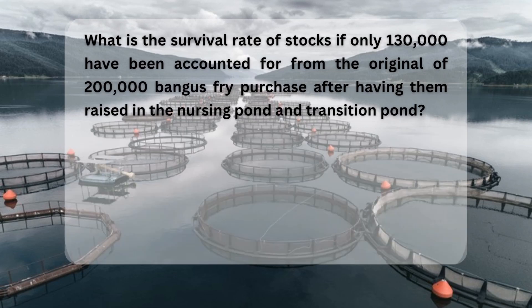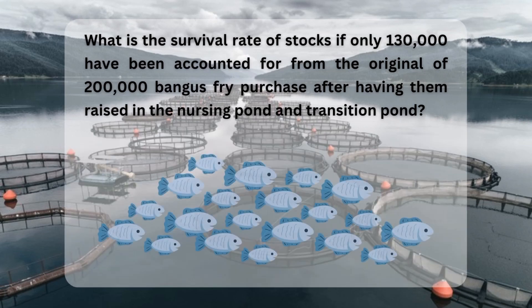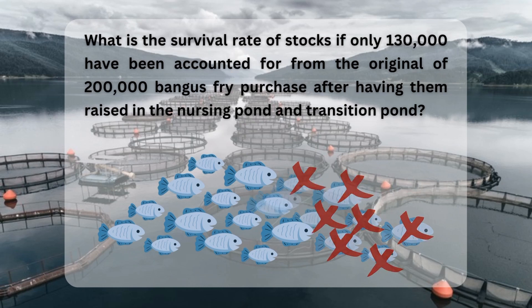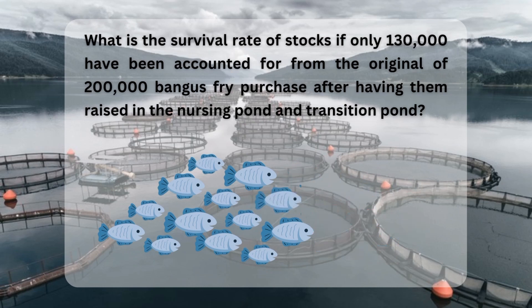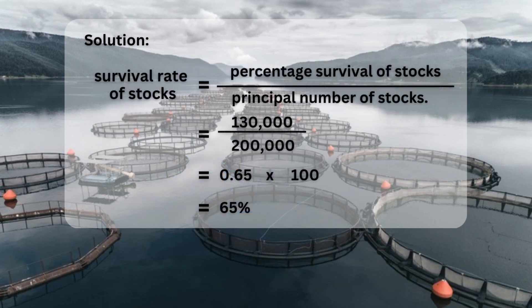For example, what is the survival rate of stocks if only 130,000 have been accounted for from the original 200,000 bangus fry purchased after having them reared in the nursery pond and transition pond? To solve for the survival rate, we divide 130,000 by 200,000, which is equal to 0.65. Multiplying 0.65 by 100 gives 65%.